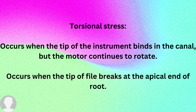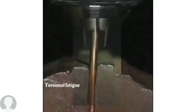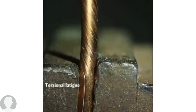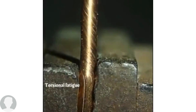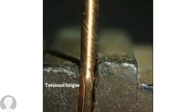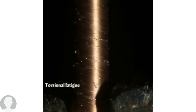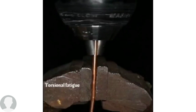With torsional stress, the tip of the file binds in the canal while the motor continues to rotate. So when you remove the file, you will see that the tip is broken at the apical end. Here in the video you can see the tip of the file binding in the canal while the motor continues to rotate, resulting in a broken tip at the apical end.